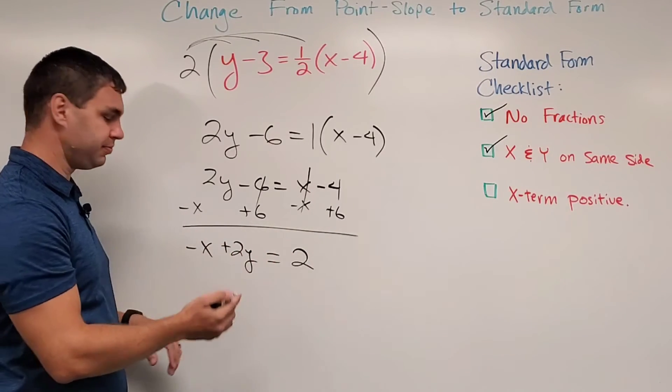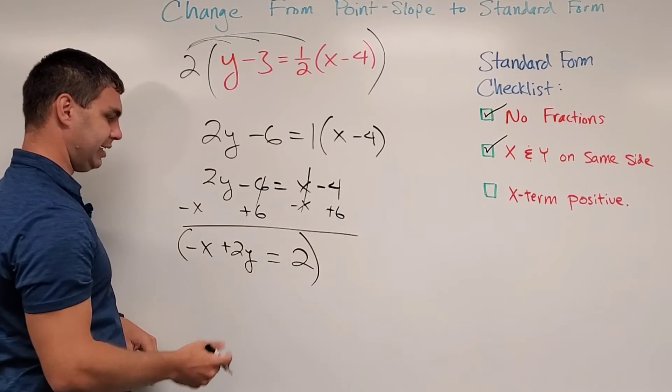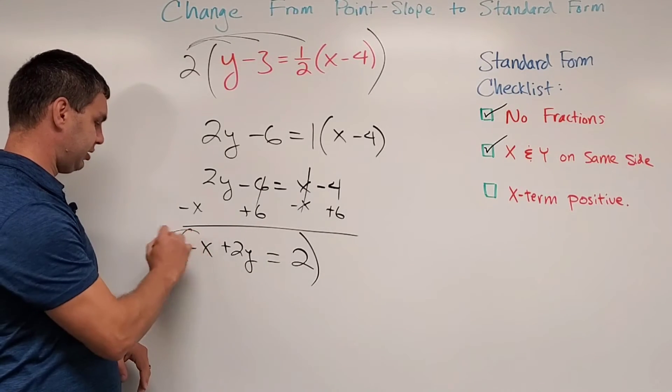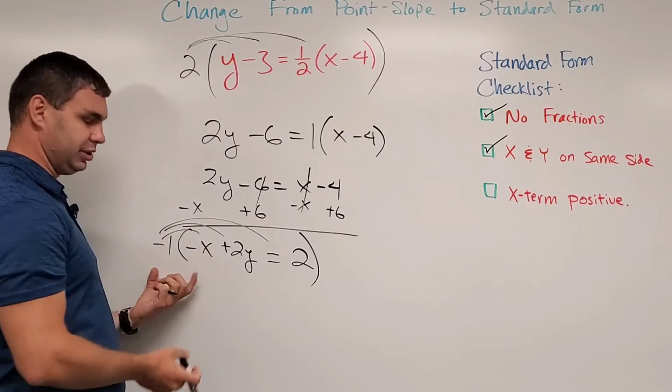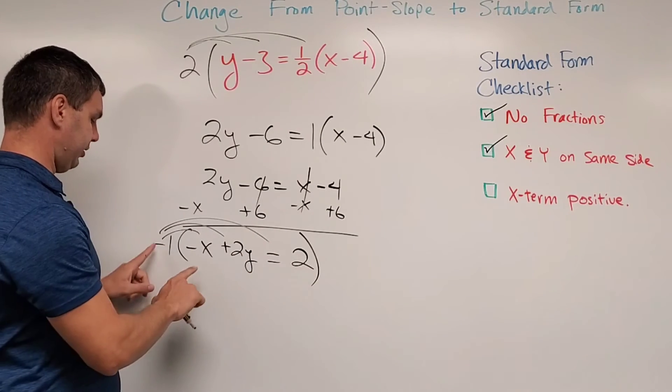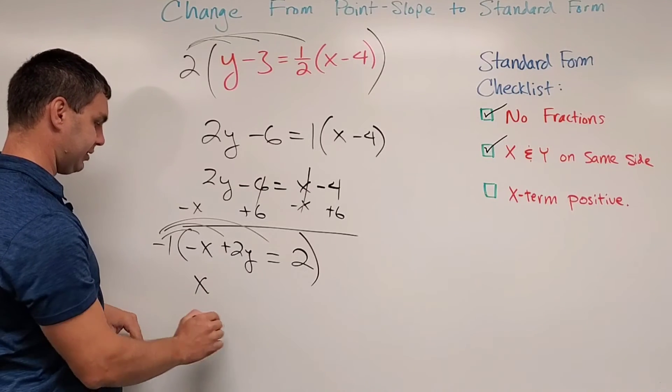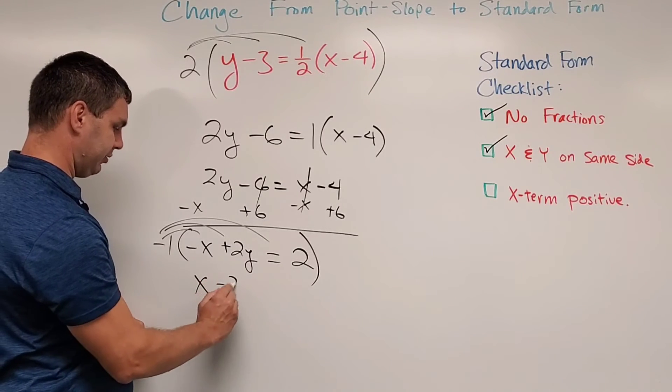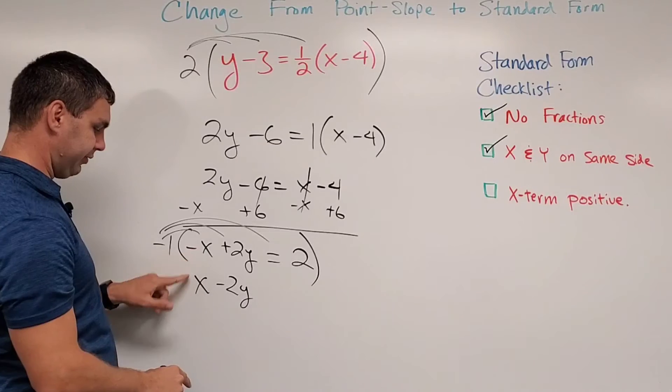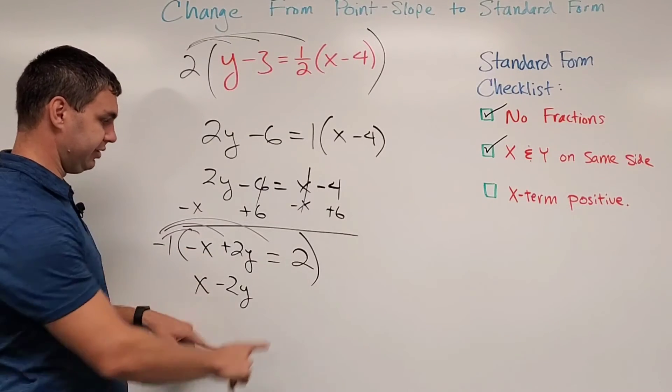When I distribute this negative 1 through, what it really is going to do is just change all my signs. So now negative, you can think of it as negative 1 times negative x and get positive x, negative 1 times 2y and get negative 2y. Or just think it was negative, now it's positive. It was positive, now it's negative. This one's positive, so it's going to be negative.